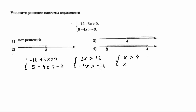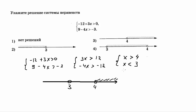Теперь нам осталось начертить числовую прямую. На числовой прямой поставим наши числа: 3 и 4 — открытые точки, так как они не входят. Из первого неравенства: x больше 4, то есть от 4 до плюс бесконечности. Из второго: x меньше 3, то есть от минус бесконечности до 3. Верхняя и нижняя части не пересекаются.